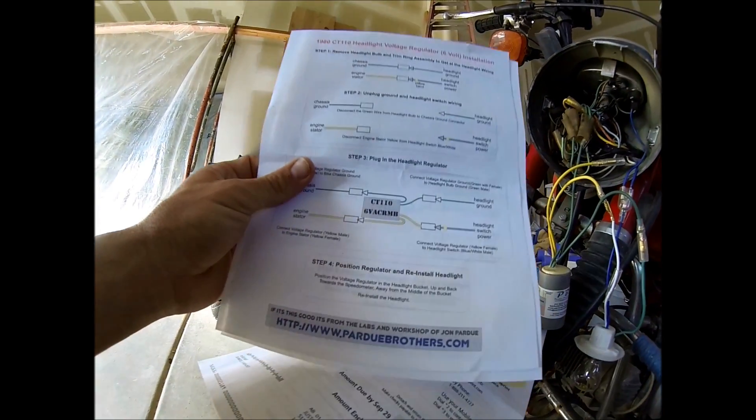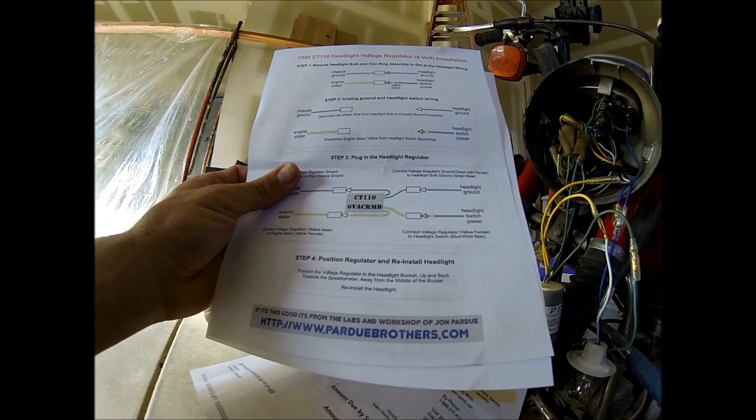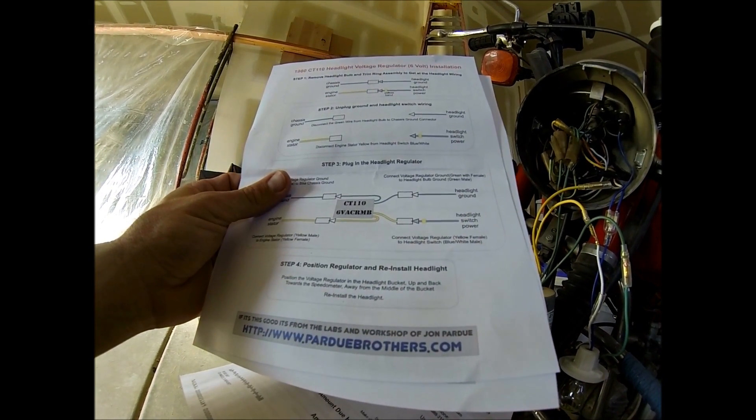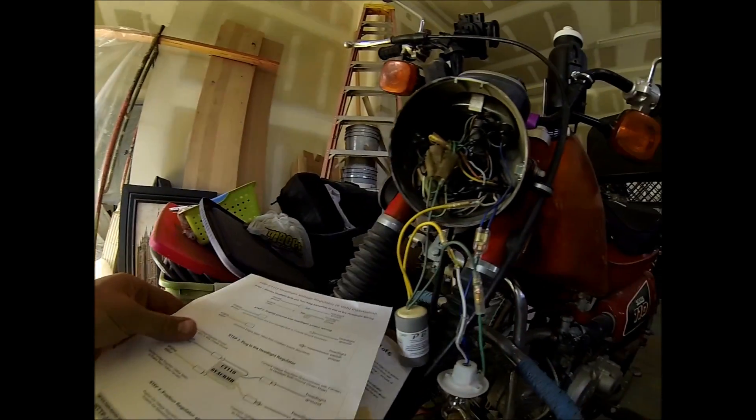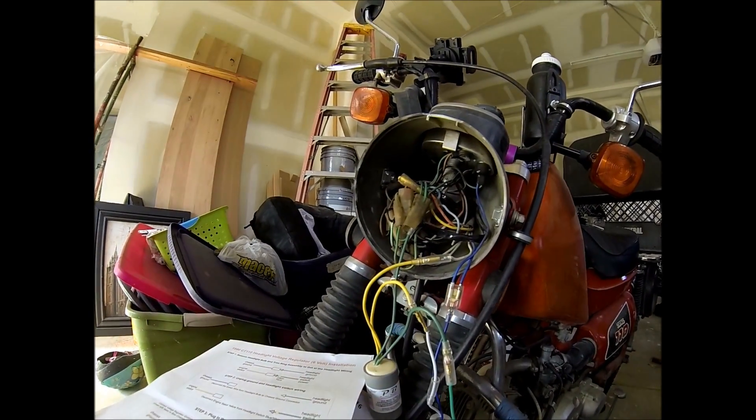That's it. It says here that you need to position the voltage regulator in the headlight basket up and then back towards the speedometer, away from the middle of the basket. So that's what I'm going to do, just install that and then we'll be done.